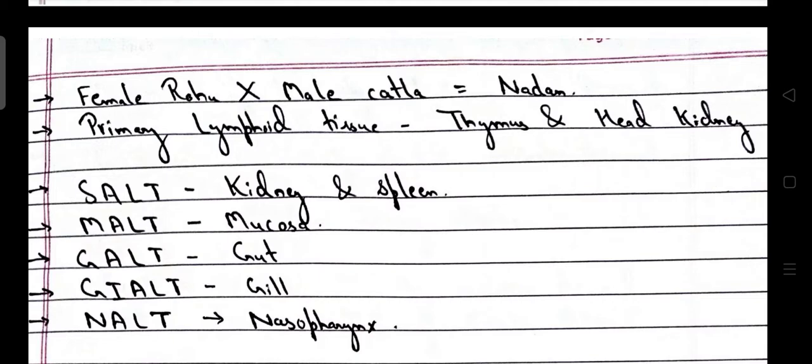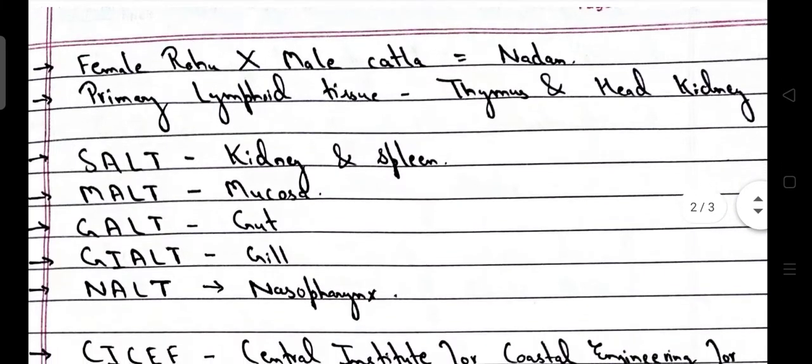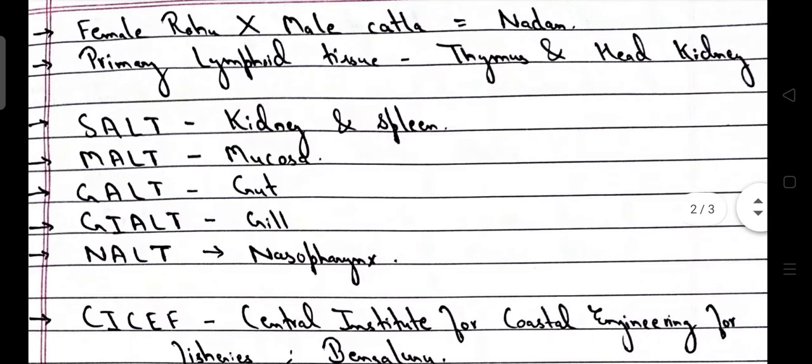Female rohu mated with male katla leads to the production of Nadan. Primary lymphoid tissues are the thymus and head kidney.